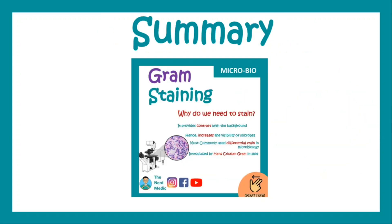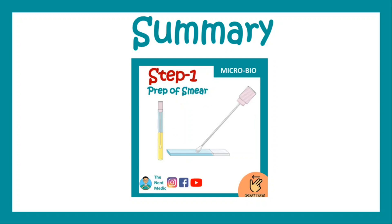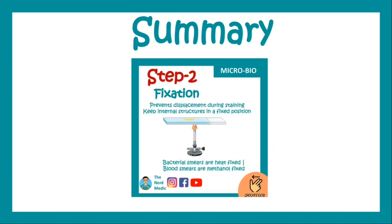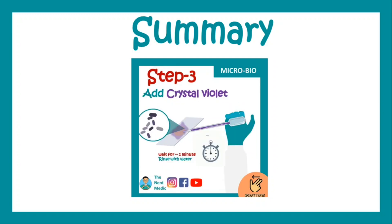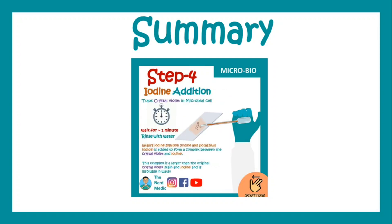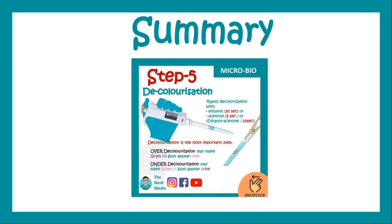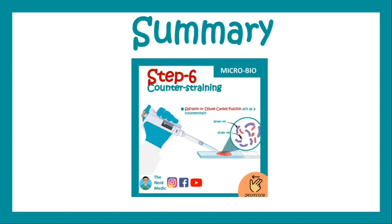In summary, we have learned about gram staining — the need for gram staining and the steps from smear preparation, to fixation, to crystal violet addition, then iodine addition, then decolorization, and finally counter staining.